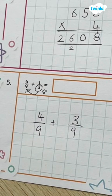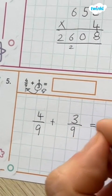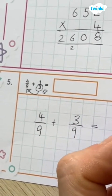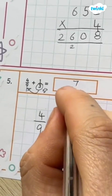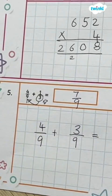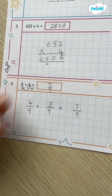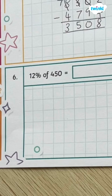And whatever we do to the denominator, the bottom number of the fraction, we do to the top. So 4 ninths plus 3 ninths, and then add the top numbers, the numerators together. The bottom number, the denominator, stays the same. And finally question 6.